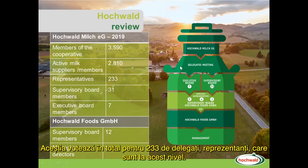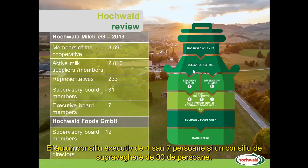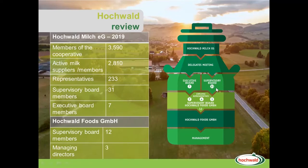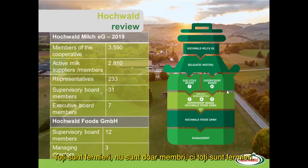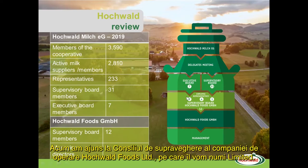They vote for a total of 233 delegate representatives, which is this layer. And out of this delegates layer, they have an executive board of four or seven people and a supervisory board of 30 people. They are all farmers — not only members, but they are all farmers.